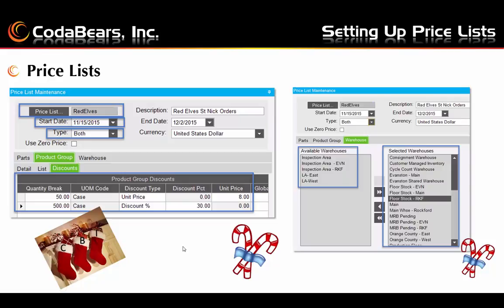The discount tab for parts is similar to the product group discounts tab; however, you choose parts to apply the discounts to instead of product groups. The grid has the exact same columns of quantity break, unit of measure code, discount type, discount percent, and unit price. On the right, we show which warehouses will get this pricing. All warehouses are selected by default and you can remove some if you do not want them to get the pricing on this price list.